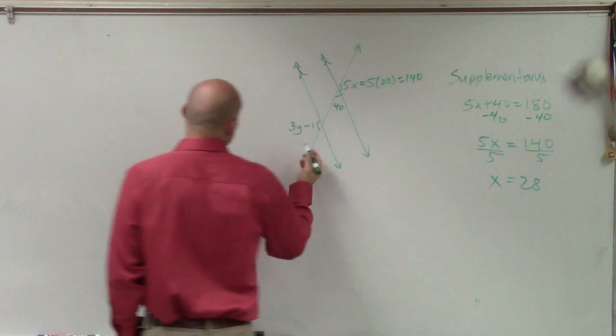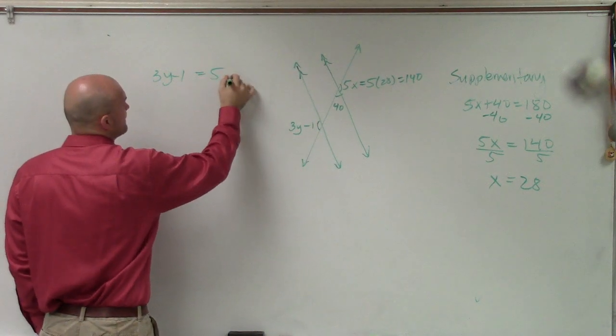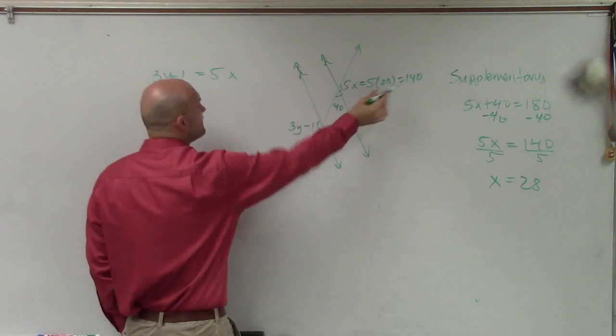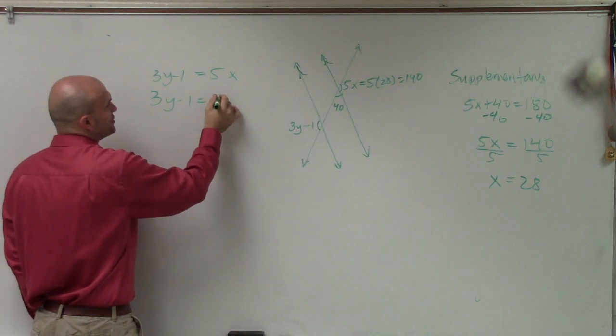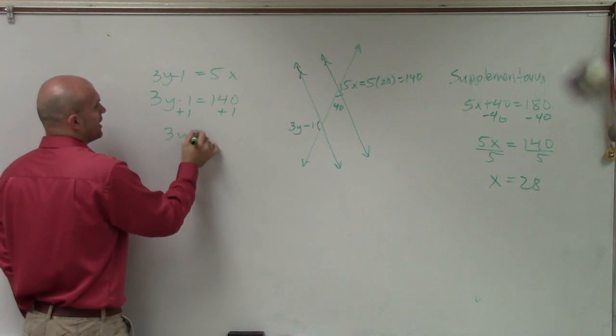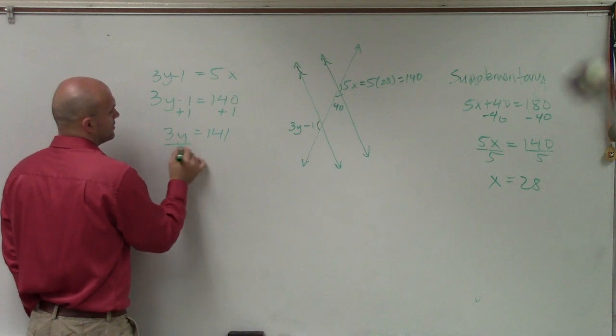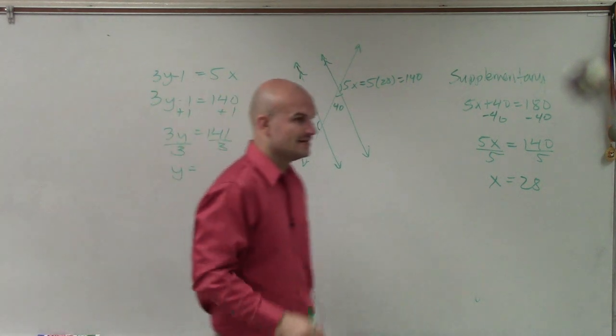So now I can say that 3y minus 1 equals 5x. Well, we just said that 5x is equal to 140. So you could say 3y minus 1 is equal to 140. Then we add 1. So we say 3y equals 141, divide by 3.